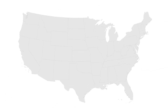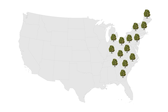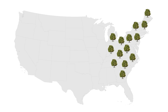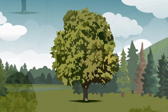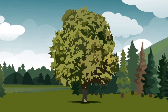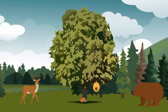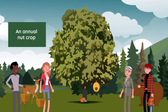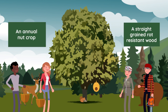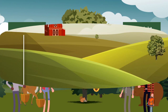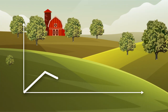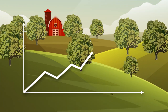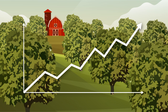The American chestnut was once one of the most important trees in the eastern US. It provided food and habitat for everything from bees to bears. For people, it was used as an annual nut crop and a straight-grained, rot-resistant wood. In some areas, farmers realized more income from the sale of chestnuts than all other farm products.